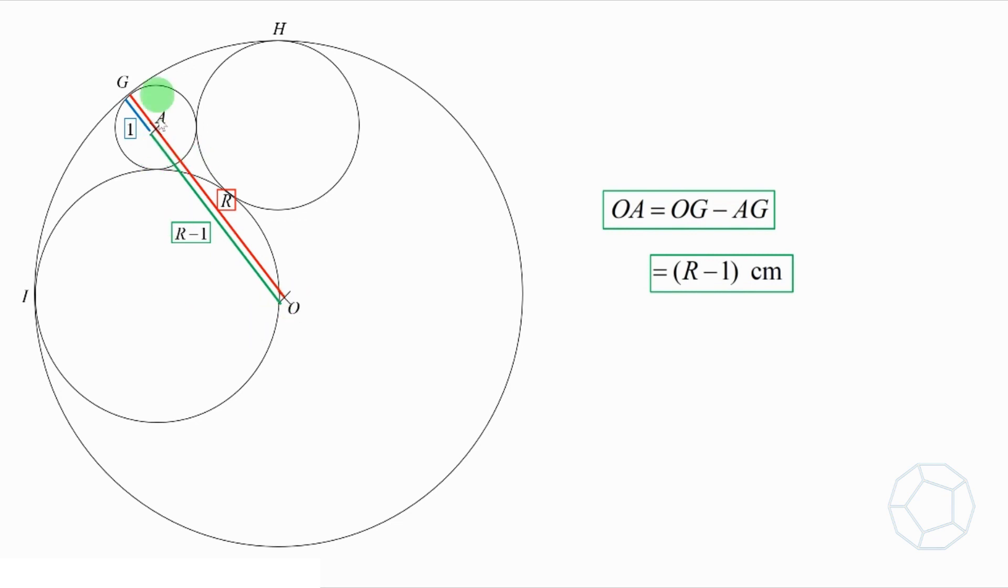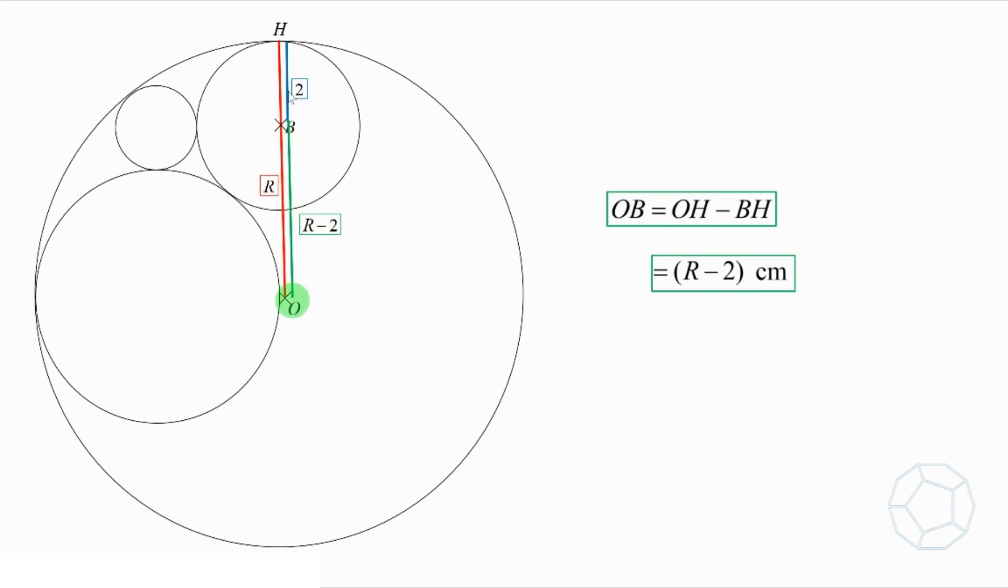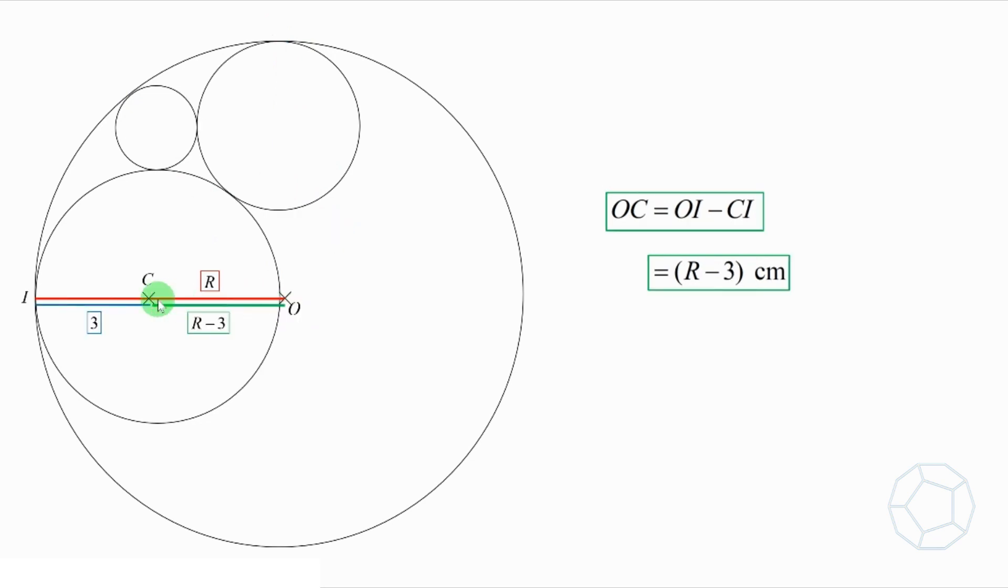For OA is equal to OG minus AG, which is R minus 1cm. Likewise, we have OB is equal to OH minus BH, which is R minus 2cm. Next, OC is equal to OI minus CI, which is R minus 3cm.